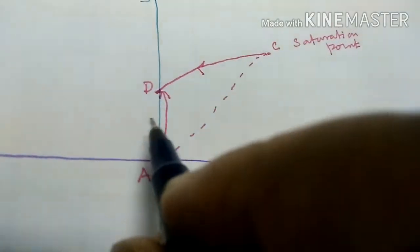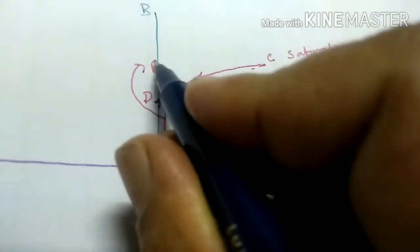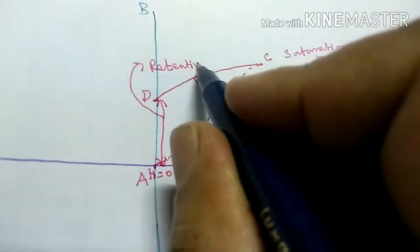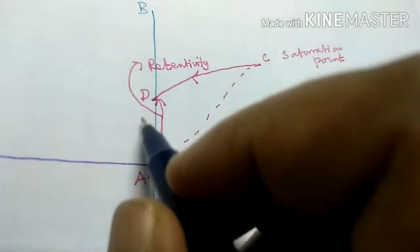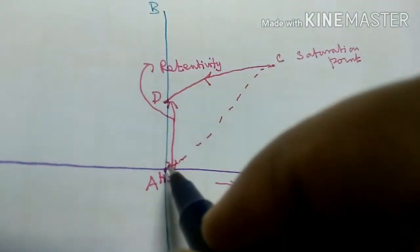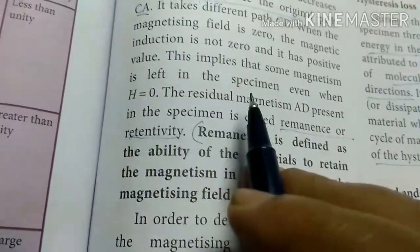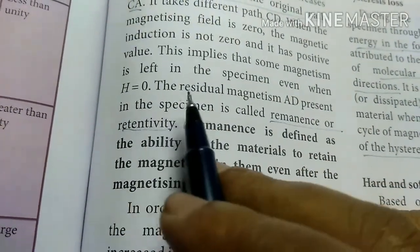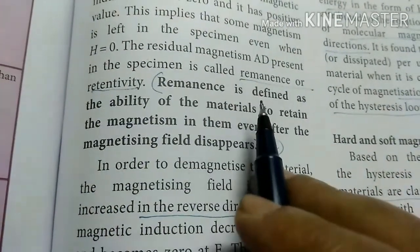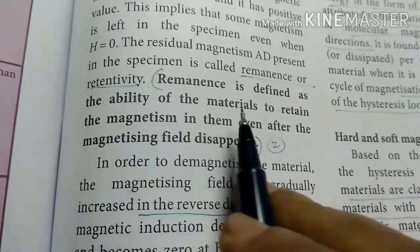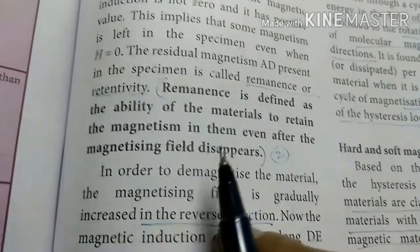This residual magnetism is also called remanence or retentivity. Retentivity is defined as the ability of the material to retain the magnetism even after the magnetizing field disappears.